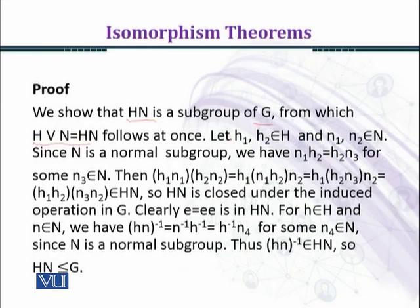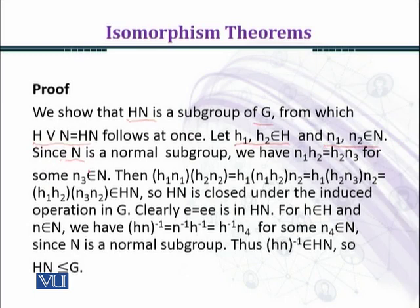We apply three conditions: closure, existence of identity, and existence of inverse. Let h₁, h₂ ∈ H and n₁, n₂ ∈ N. Since N is a normal subgroup — as given in the lemma statement — we have n₁h₂ = h₂n₃ for some n₃ ∈ N, because left coset equals right coset.